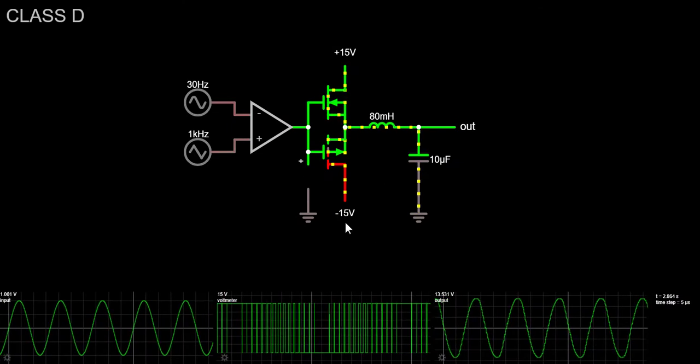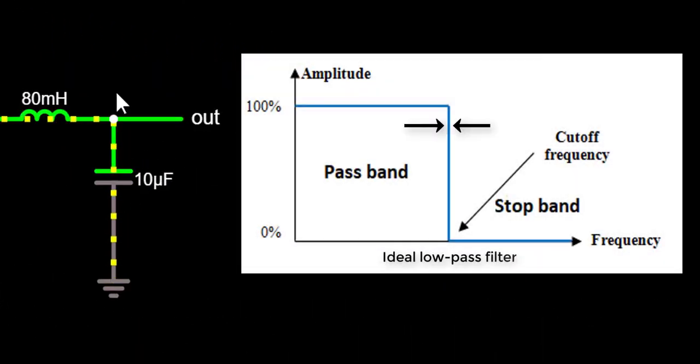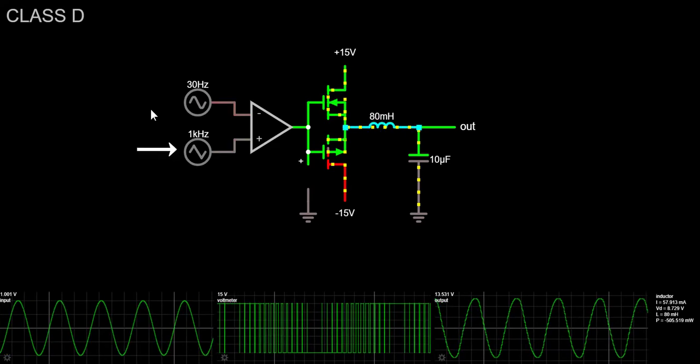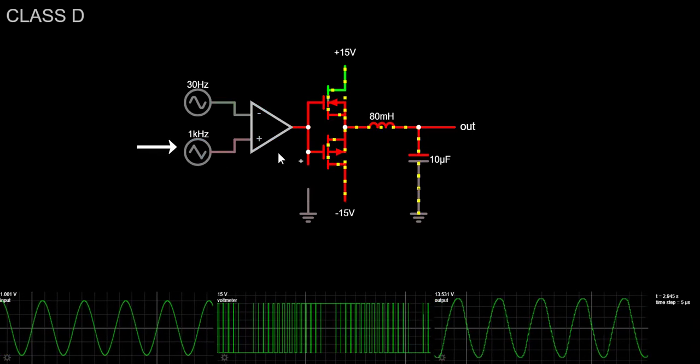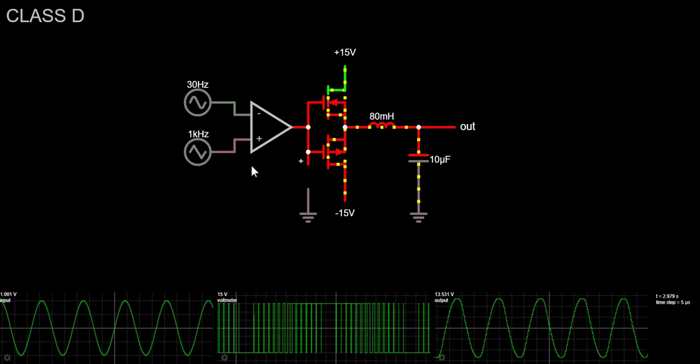Unfortunately, as you might know, a real filter, not an ideal one, does not have a perfect brick-wall transition from pass-band to stop-band, so we want the triangle signal to have a frequency at least 10 times higher than 20 kHz, which is the upper human hearing limit.